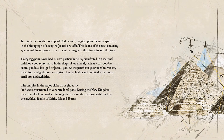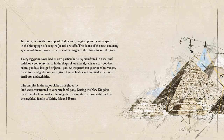As human society evolved, people gradually gained a degree of personalized identity and a higher sense of individuality. Humans began to conceive the gods in a personalized form. This stage in development is called mythical. In Egypt, this process began during the late prehistoric period when writing was being invented and myths were being formulated. At that stage, every Egyptian town had its own particular deity, manifested in a material fetish or a god represented in the shape of an animal, such as Cat Goddess, Cobra Goddess, Ibis God, or Draco God. As the pantheon grew in cohesiveness, these gods and goddesses were given human bodies and credited with human attributes and activities. The temples in the major cities throughout the land were constructed to venerate local gods.